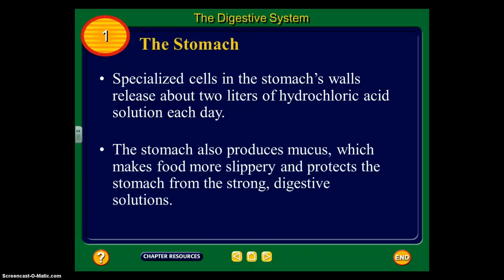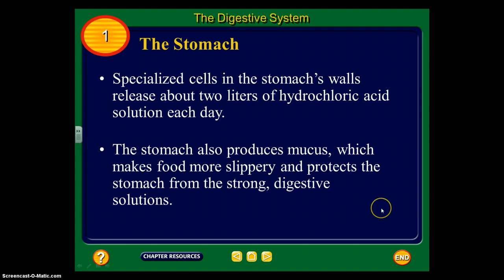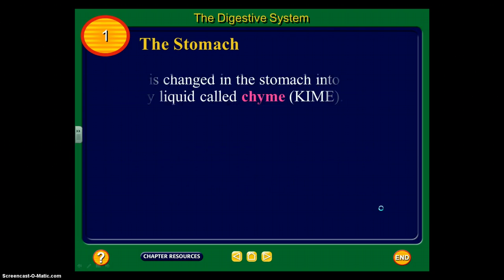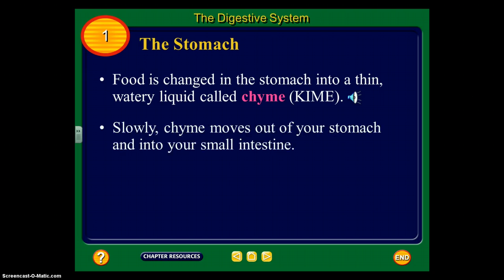The stomach also produces mucus because that acid is hard on your stomach. This mucus makes the food more slippery and helps protect the stomach from the strong digestive solution so it's not eating away at your stomach. Food is changed in the stomach into a thin, watery liquid called chyme. Slowly, chyme moves out of your stomach and into your small intestine.